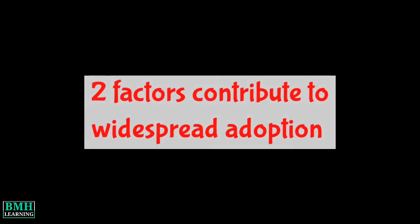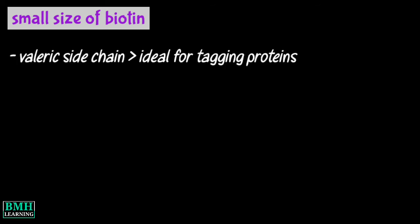The widespread use of biotin is primarily due to two factors. The first is the relatively small size of the biotin molecule. The presence of a valeric side chain makes it ideal for tagging proteins and allows for extensive binding to biologically active macromolecules such as antibodies without impedance to their functions.